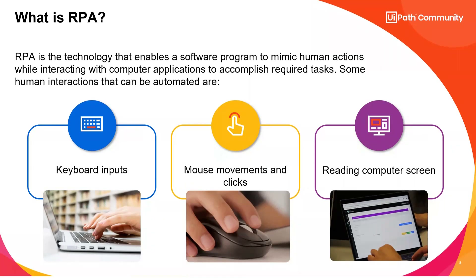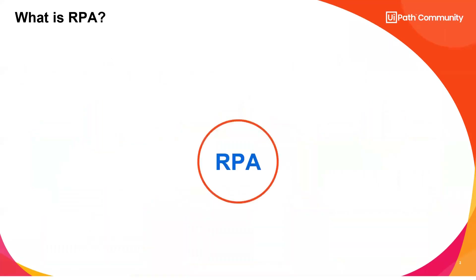RPA can take keyboard inputs, read mouse clicks, and also read the computer screen. As a whole, whatever you are able to do with a keyboard and mouse, the same thing can be done with a robot. Whatever you can do as a human, the same can be done by the robot. I'll show you one small demo by creating an automation in RPA to show you how easy it is to build robots.